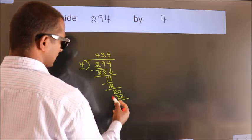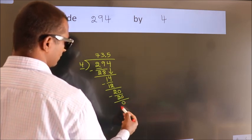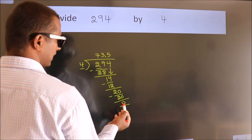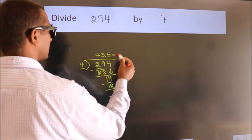Now we subtract. We get 0. We got remainder 0. So this is our quotient.